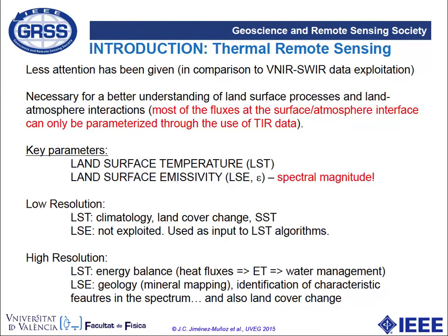Surface temperature can be used in climatology, analysis of land cover changes, oceanography using sea surface temperature, and for studies related to energy balance — for example, retrieval of heat fluxes or evapotranspiration, which is a key variable in water management. Surface emissivity is also important: it is required to obtain accurate values of land-surface temperature, but it also provides useful information by itself, especially in geology for mineral mapping through identification of characteristic spectral features of the emissivity spectrum.